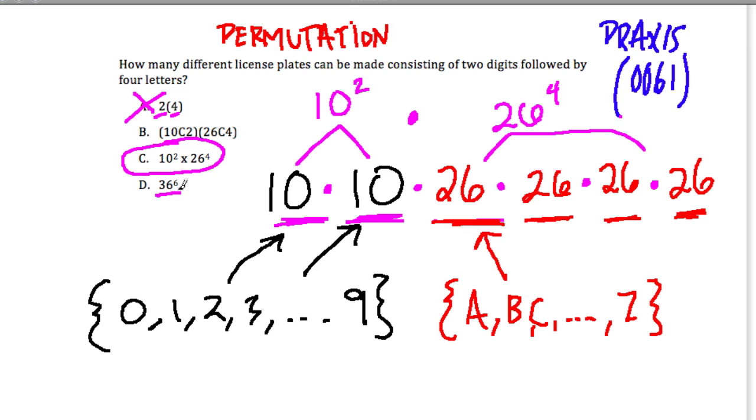Thirty-six to the sixth power. That would be the case if in each slot we could have letters or numbers. Because then if we combine both sets here, we have all the numbers and then all the letters. Altogether, that would be 36 options. And if we could put any number or letter in any spot,